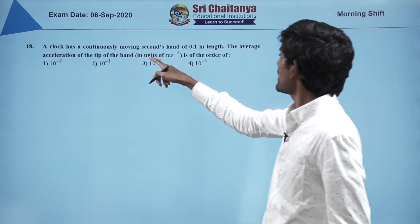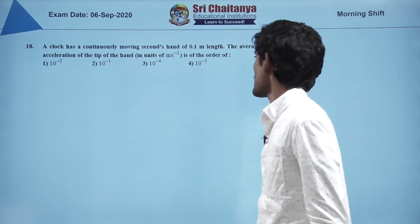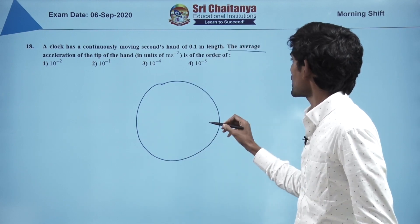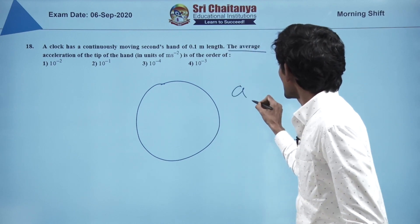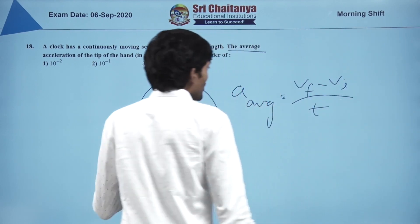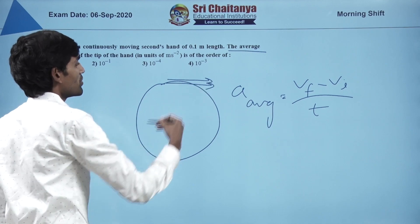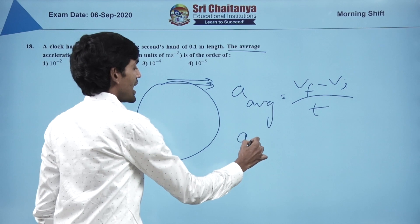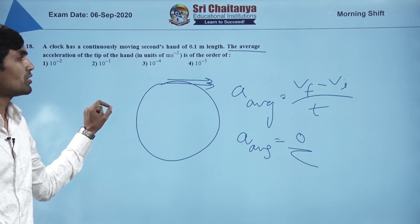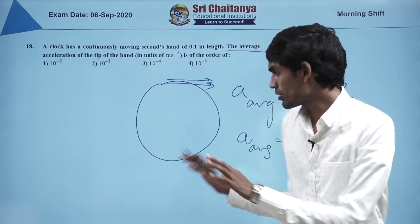A clock has a continuously moving seconds hand of 0.1 m length. The average acceleration of the tip is asked. Average acceleration = (v_final − v_initial)/total time. Over a complete cycle, v_final = v_initial in direction, so the average is technically 0. This question is problematic and we move to the next question.